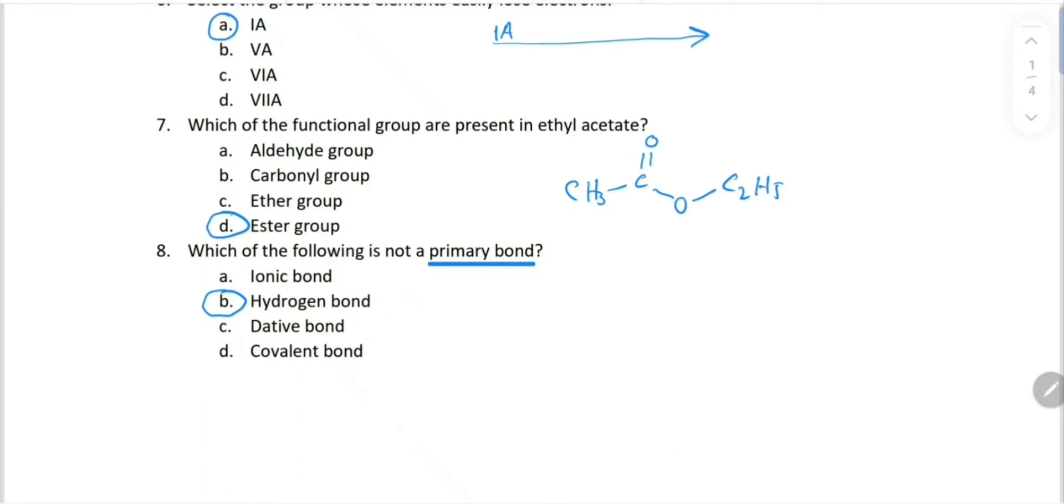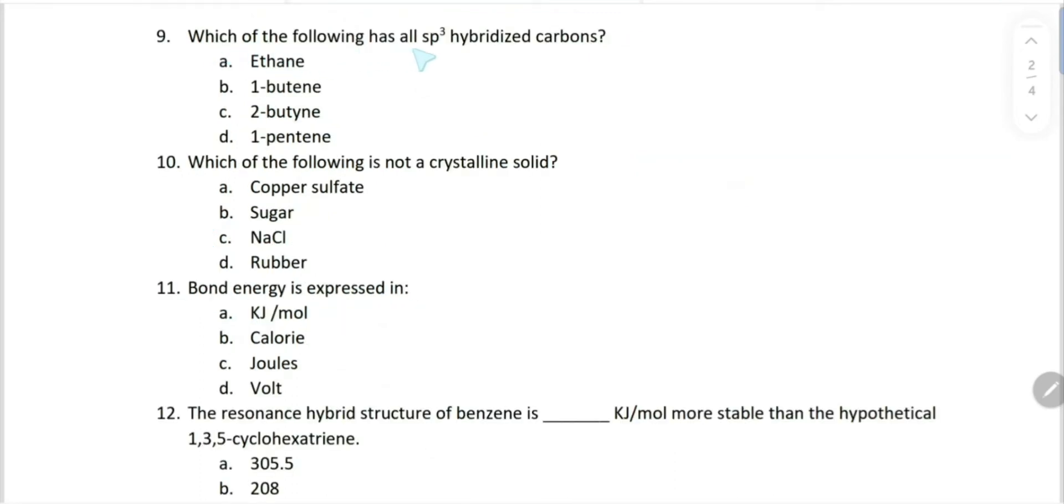Which of the following has all sp³ hybridized carbons? Ethane - yes. All alkanes have sp³ hybridized carbon. Choice A is correct. One-butene, two-butene, one-pentene all have sp³ as well as sp² hybridized carbon. Remember: if carbon makes all single bonds, it's sp³ hybrid. If it makes one double bond and two single bonds, then it's sp² hybrid. If it makes two double bonds or one triple bond and one single bond, then it's sp hybrid.